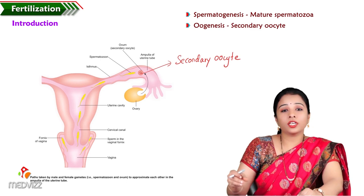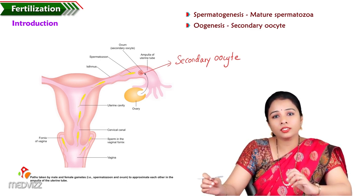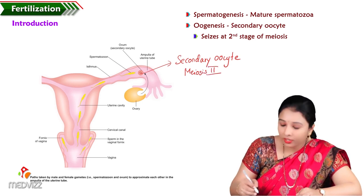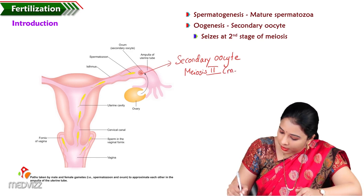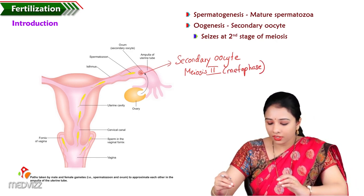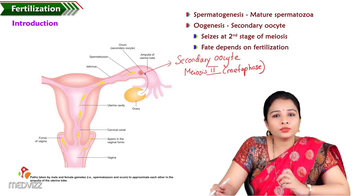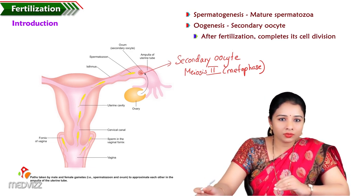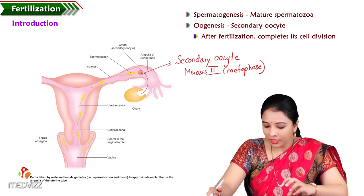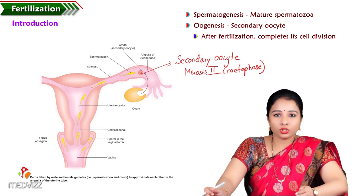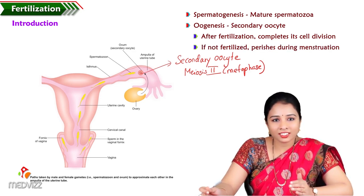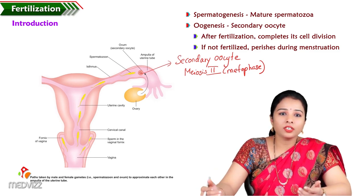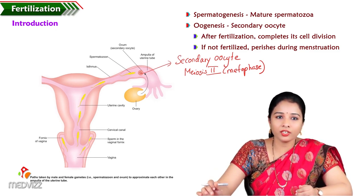The cell division in the secondary oocyte is arrested in meiosis 2 — more specifically, it is arrested in the metaphase stage. The fate of the secondary oocyte depends upon fertilization. If it undergoes fertilization — that is, if it fuses with the male gamete — then it completes meiosis 2 and finally forms a matured ovum. If fertilization doesn't occur, the secondary oocyte remains in the same stage, perishes, and is removed from the uterus during menstruation.